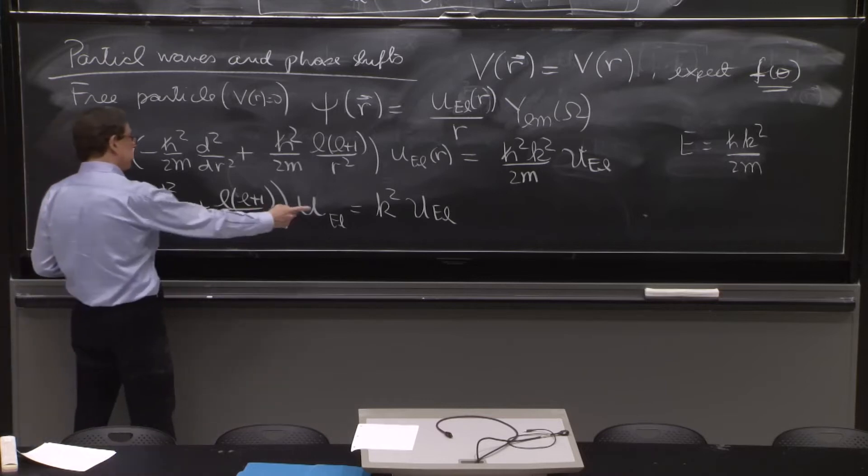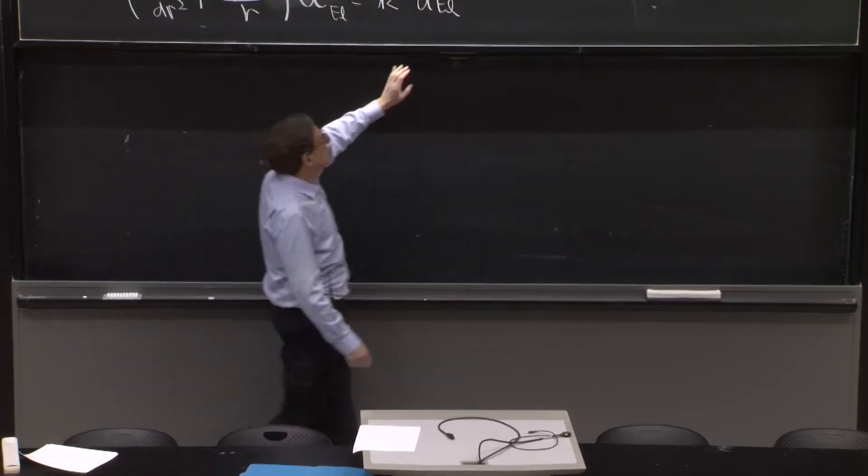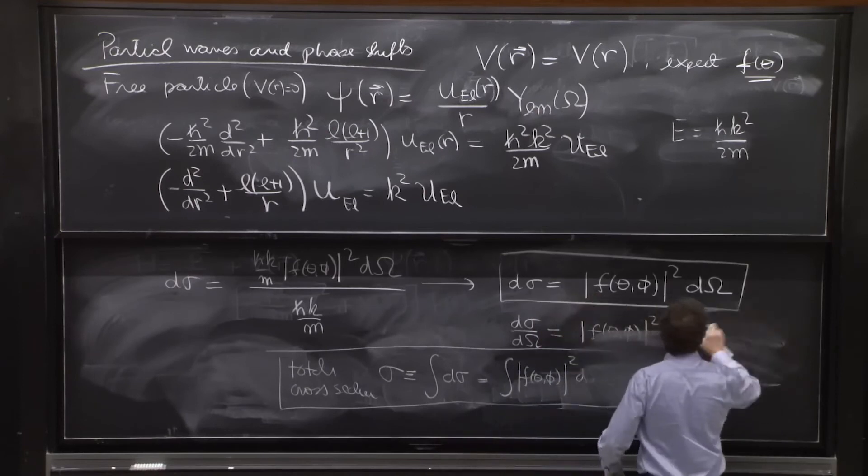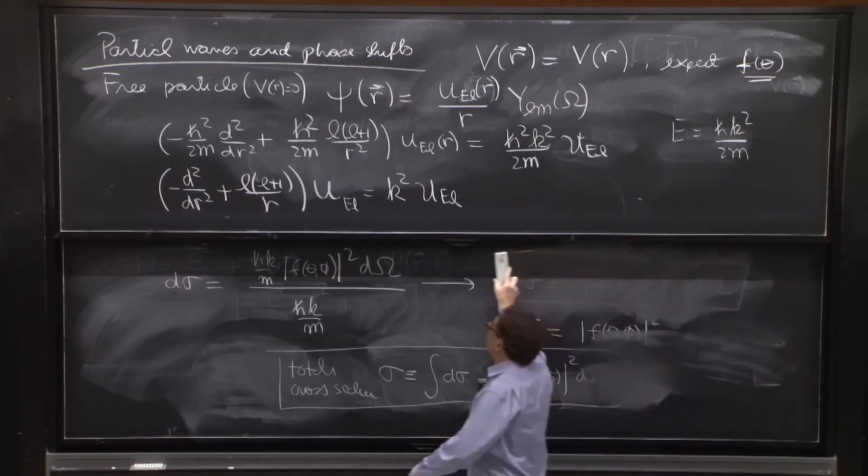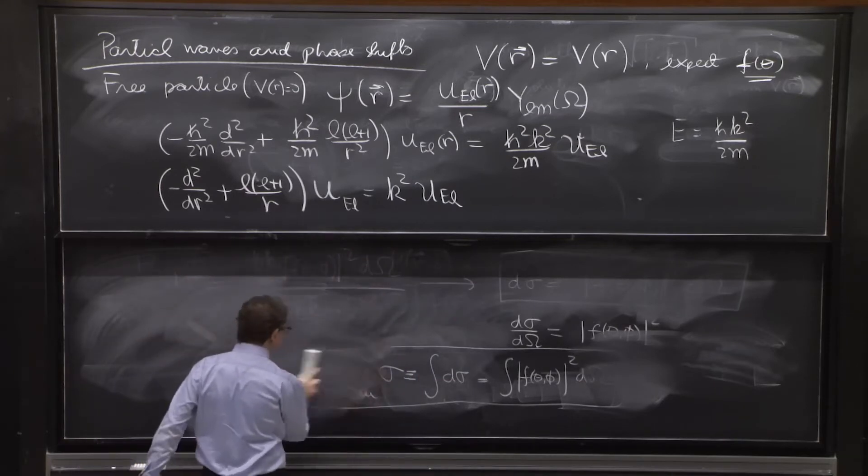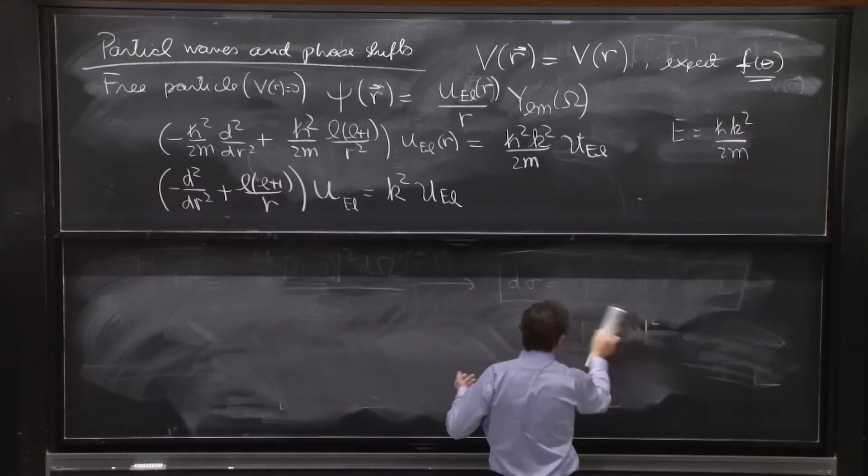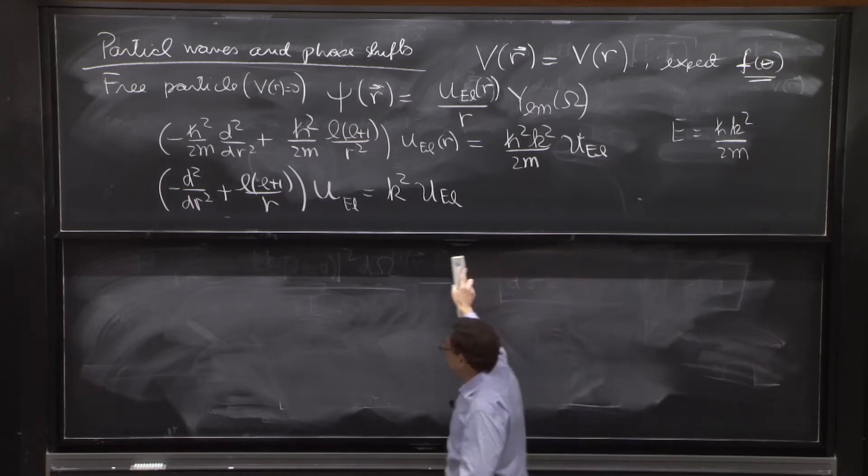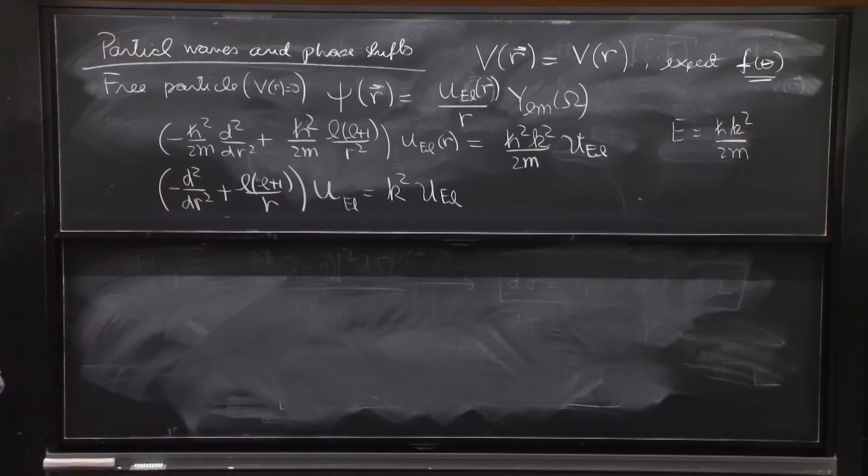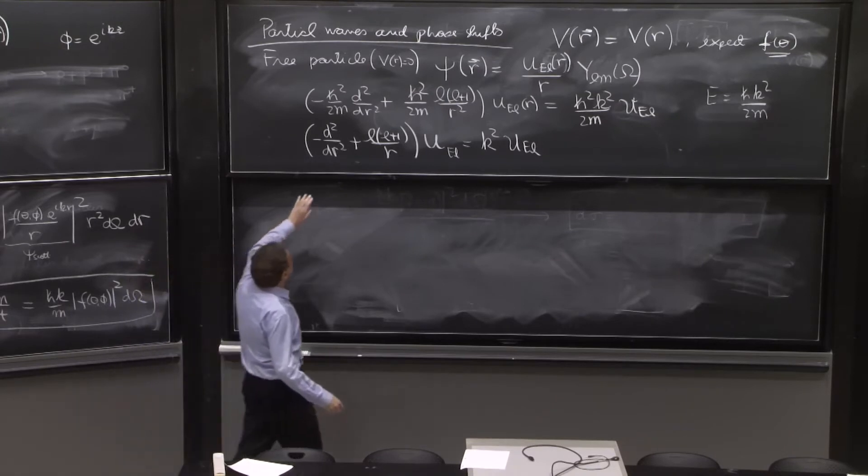Now, this is like the Schrodinger equation. And I think when you look at that, you could get puzzled whether or not the value of k squared or the energy might end up being quantized. Schrodinger equation many times quantizes the energy. But here it shouldn't happen. This is a free particle. All values of k should be allowed. So there should be no quantization.